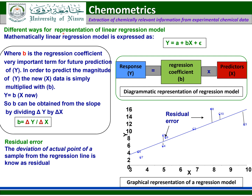For different ways of representation of the linear regression model, mathematically it is expressed as y = a + b × x + error term, where b is the regression coefficient and the most important term because it is used for future prediction of y. In order to predict the magnitude of y, the new x data is simply multiplied with b: y = b × x new data. b can be obtained by dividing delta y by delta x, that is the slope.